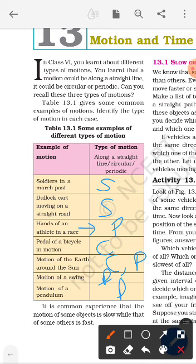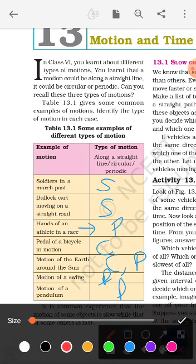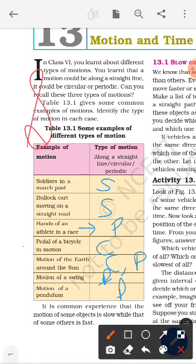Now let's see related to our new lesson. It is a common experience that the motion of some objects is slow while that of some others is fast. So we have introduced the new terms: slow motion and fast motion.